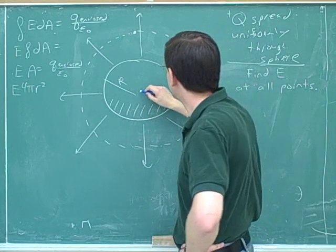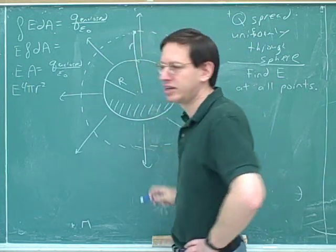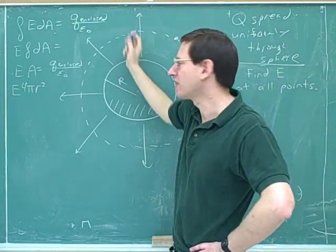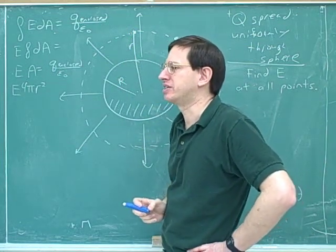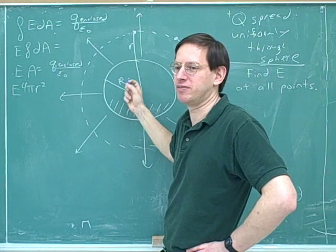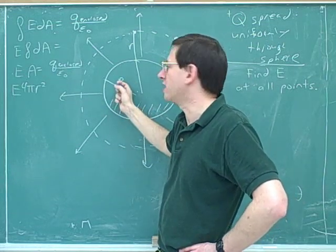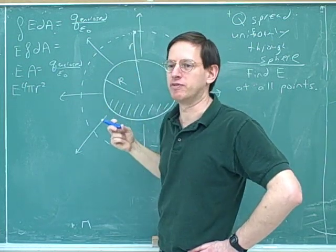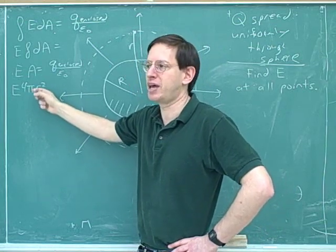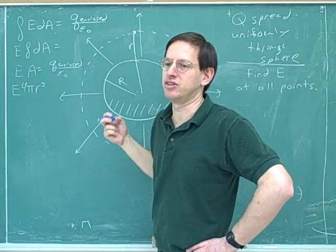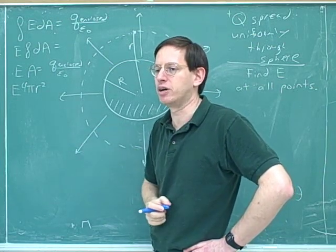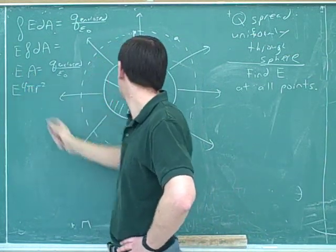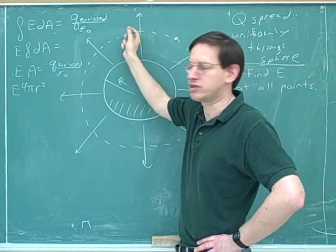What does this r represent — does it represent the radius of the charge or the radius of the Gaussian surface? We want the area of the Gaussian surface. The thing that messes people up is when there are lots of r's. We tend to use capital R for the charges or the object, and lowercase r for the points in space we're focusing on. Here we need lowercase r for the Gaussian surface radius — the distance between the center of the sphere and the surface.